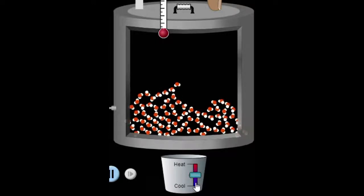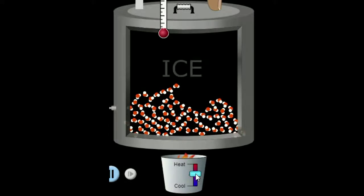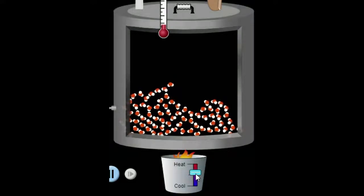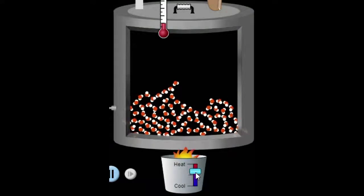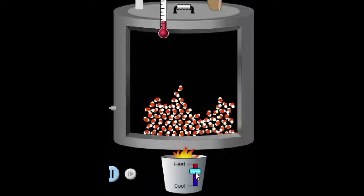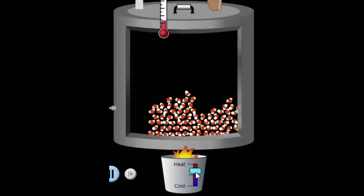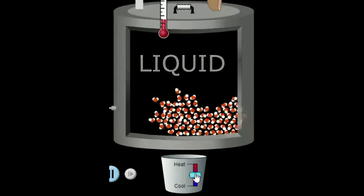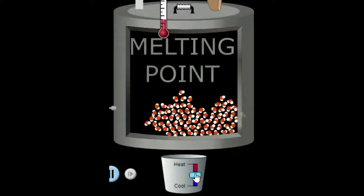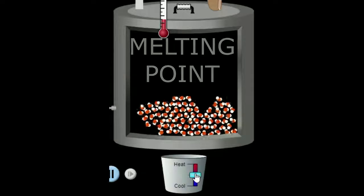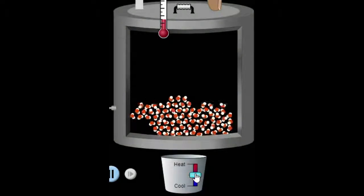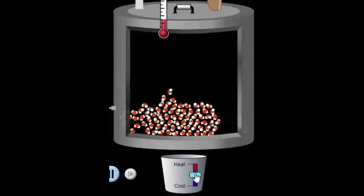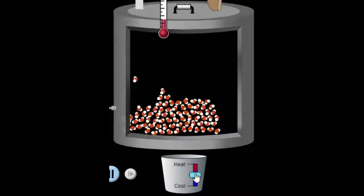Now let us understand melting. When you start increasing the temperature of ice, it gradually starts melting — that is, the particles gain energy, start moving faster in their fixed position. At some point, they break the force of attraction, move out of their fixed position, and start breaking free, becoming a liquid. This point at which ice melts — 0°C — is called its melting point. The level of attraction between particles of different substances is different, hence each solid has its own unique melting point.